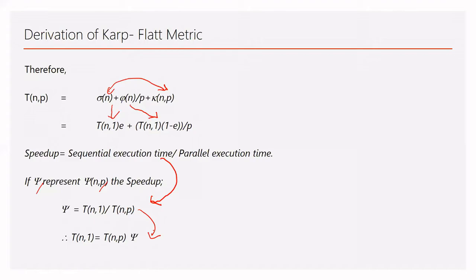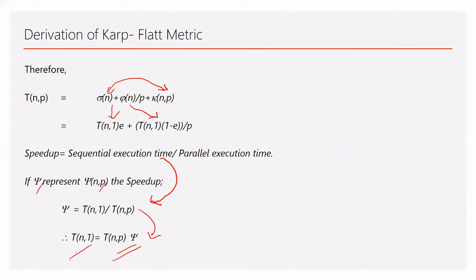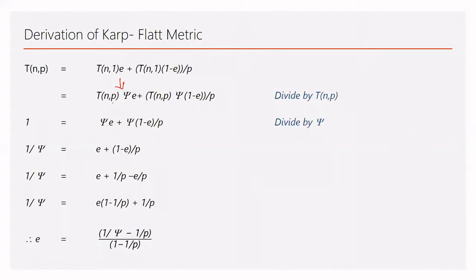We write this equation as T(N,1) equals T(N,P) · Psi. Then T(N,1) equals T(N,1)·E plus T(N,1)·(1−E)/P. We replace T(N,1) with T(N,P)·Psi, rewriting as T(N,P)·Psi·E plus T(N,P)·Psi·(1−E)/P.